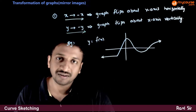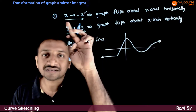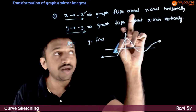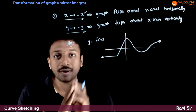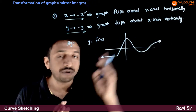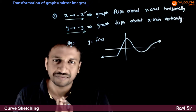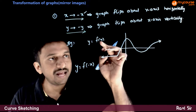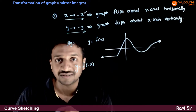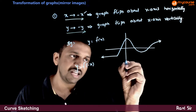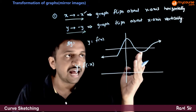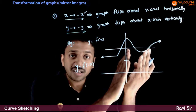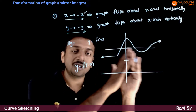Remember these two very simple rules. If you replace x with minus x, the graph flips about the y-axis horizontally. That is, if y = f(x) is a curve, and you want to draw the graph of y = f(-x), the positive side graph will go to the negative side of x.